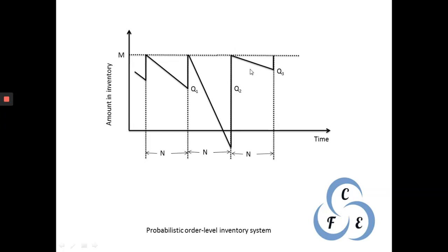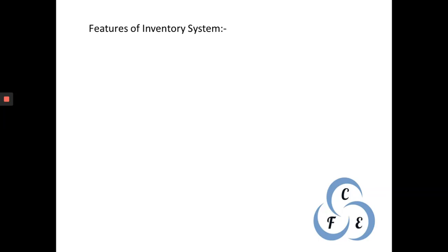In the next cycle, suppose the consumption is only q3. We start from M and the inventory reduces to the q3 point. The order quantity required at the end of period N is q3. Since lead time is zero, as soon as we place the order we receive it, and this is how simulation of the inventory system takes place. We can extend the graph further as required.